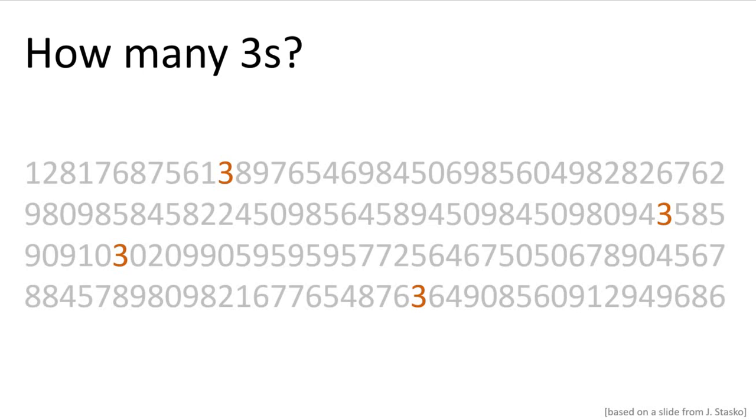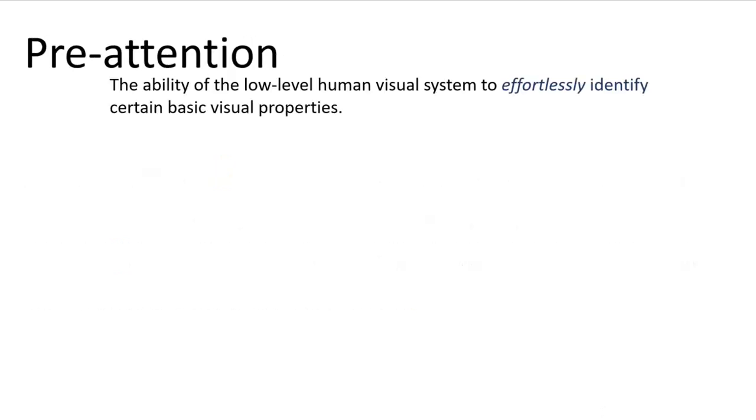Your brain saw the threes and mapped them before your brain even remembered that you were supposed to be looking for threes, right? This is called pre-attention. It's the ability of the low-level human visual system to effortlessly identify basic visual properties. That's a mouthful. Pre-attention. This is really important stuff.